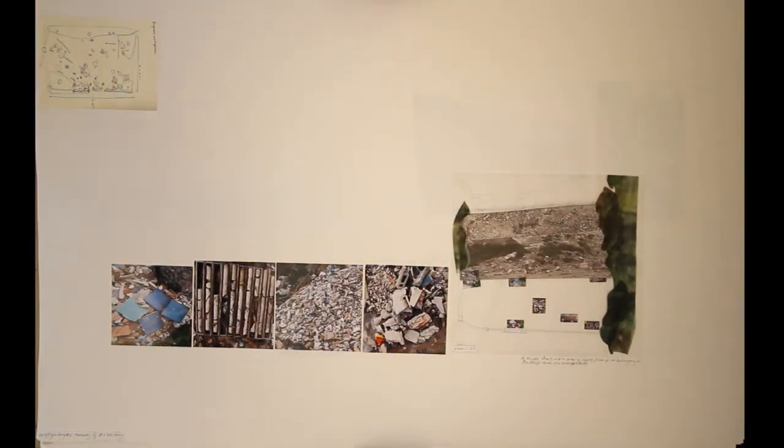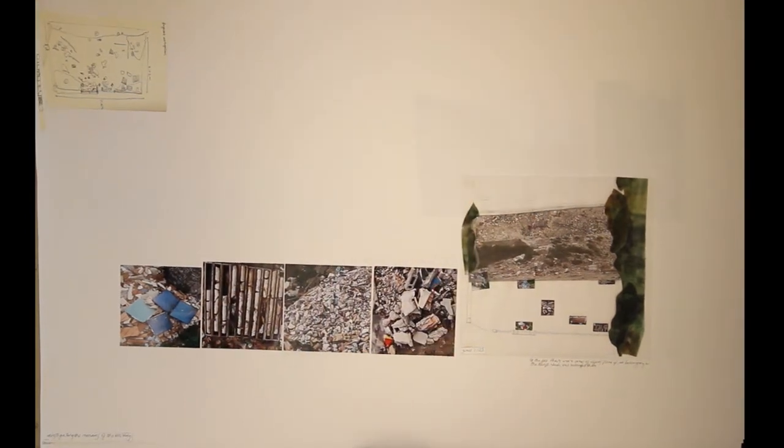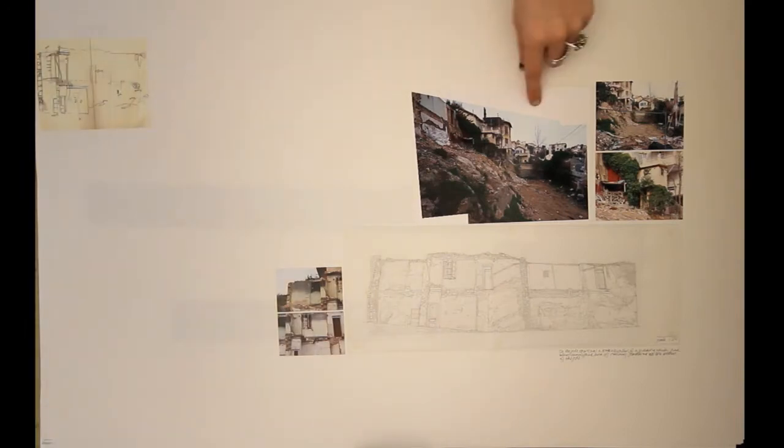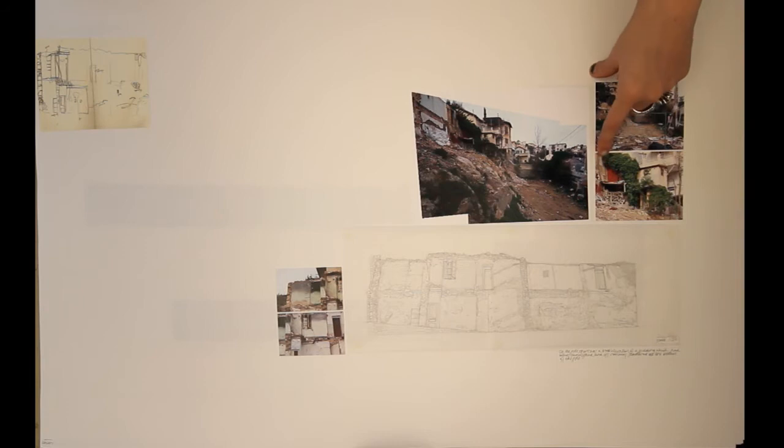We then found our site which had all these objects of rubbish scattered around from this house at the top of the hill. This house had been demolished and all of the objects from the house were scattered around the site, so we started to look into how we could map the house through the objects which were left behind.